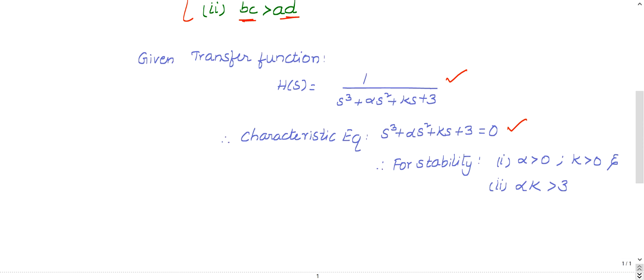For stability, all coefficients must be positive. One is there, it's already positive. Alpha must be greater than zero. K must be greater than zero. Three is already greater than zero. Then inner product is alpha times k, outer product is one times three.